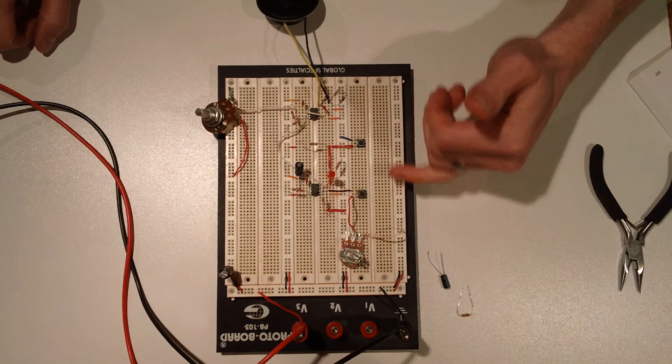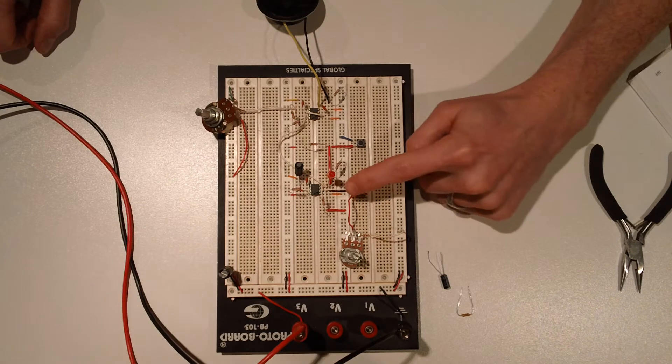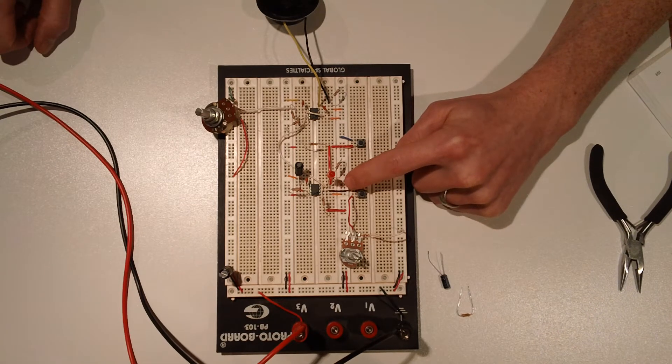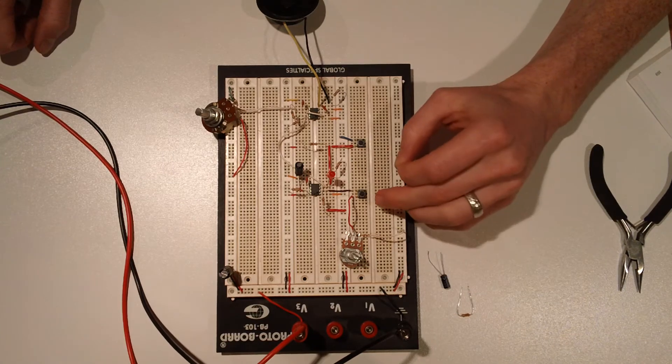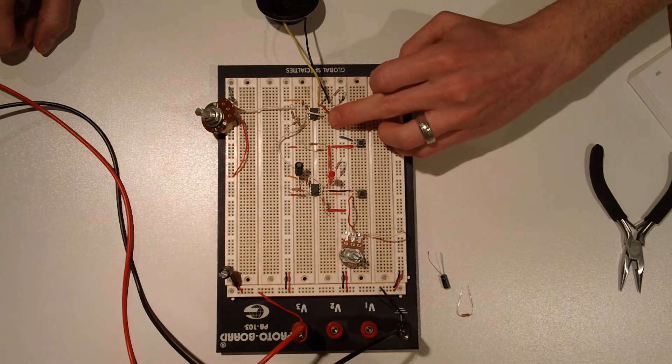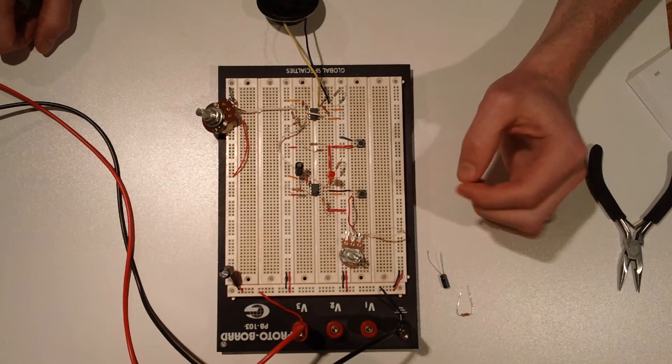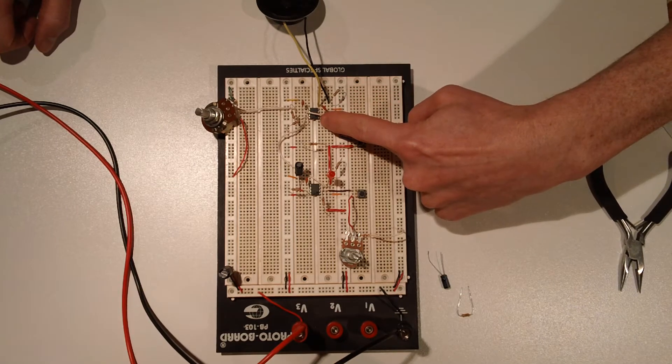So yeah, I should back up a moment. This 555 timer is running in what's called monostable mode, meaning it is working in controlled pulses. It does not have an oscillation cycle like this guy does, who is in astable mode.